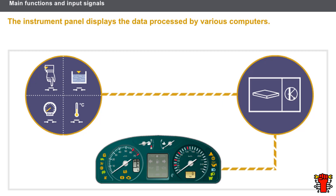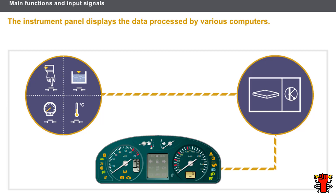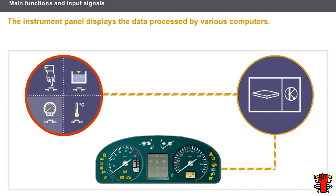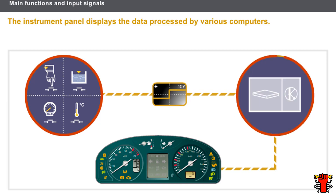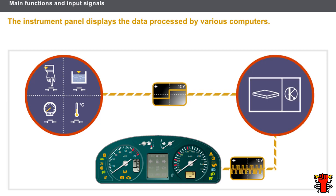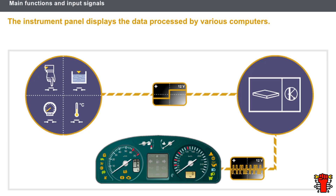As a general rule, the Instrument Panel displays data processed by a computer. Sensors transmit input signals to a computer, which analyses the signals and sends the data to the Instrument Panel.